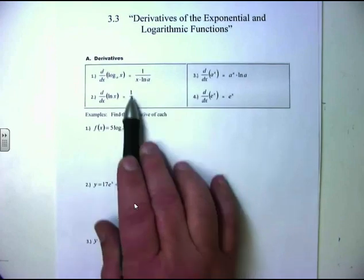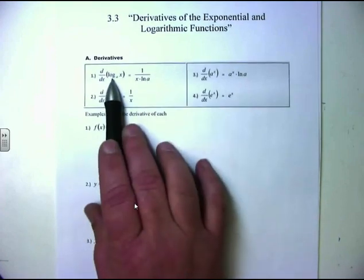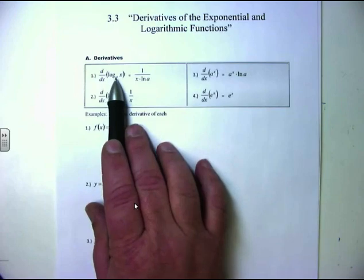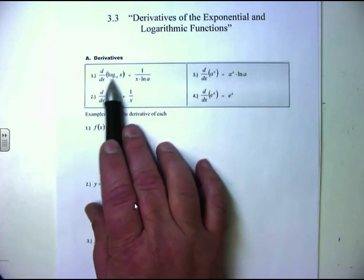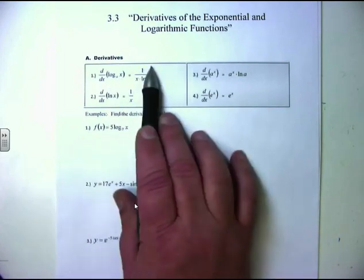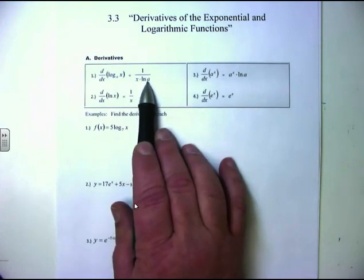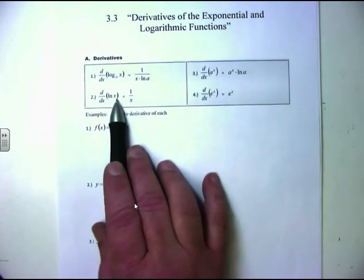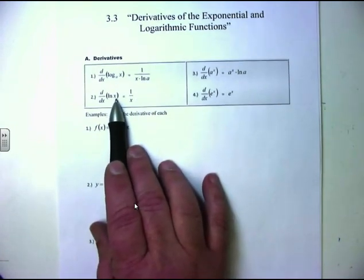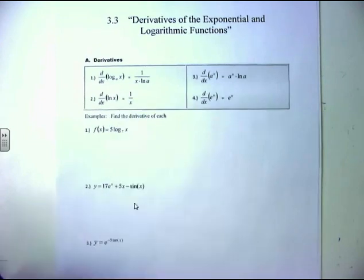These rules apply to any other log base — log base 2, log base 3, whatever it happens to be. For example, if I had log base 3 of x, that's 1 over x times the natural log of 3, versus the natural log of x whose derivative is simply 1 over x — something you need to have memorized.